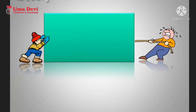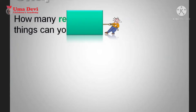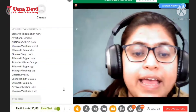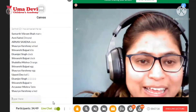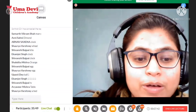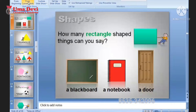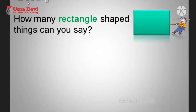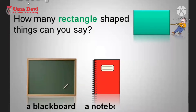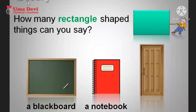Very good. Let's talk about the next shape — rectangle. How many rectangle-shaped things can you say? Blackboard — correct, it is rectangle in shape. Notebook — correct, your notebook is also rectangle in shape. And a door — door is also rectangle in shape.